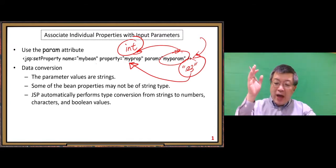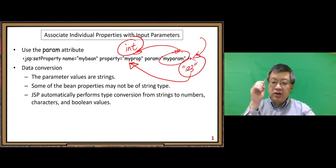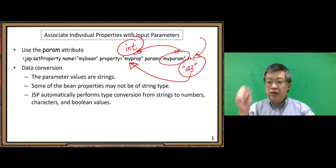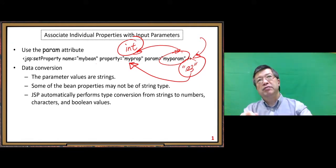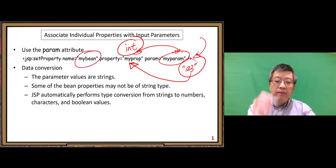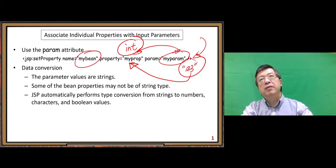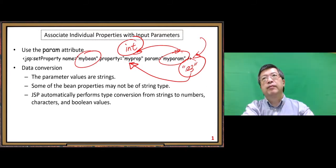That happens frequently. So for that situation, JSP automatically performs type conversion from strings to numbers, characters, and boolean values. It will check — based on your bean, your JSP bean — it will check the property data type.